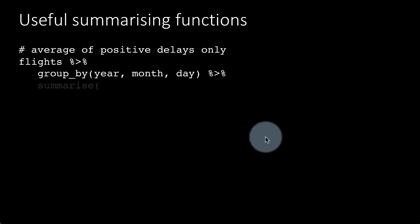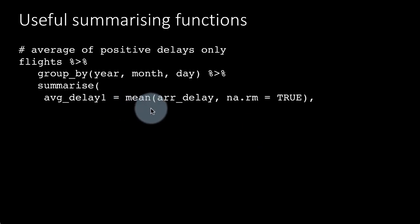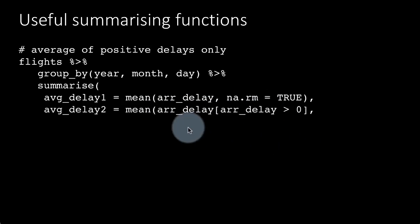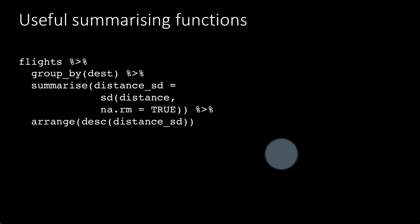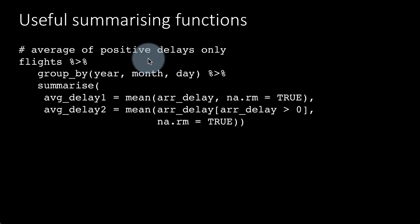So flights group by year month day, summarize average delay 1, arrival delay 1 is mean of arrival delay NA.rm equals true, and then here we are saying take the mean of the arrival delay only for values in which the arrival delay is greater than 0 and again NA.rm equals true. So you could do that and get averages of only the positive values.